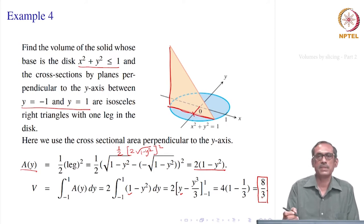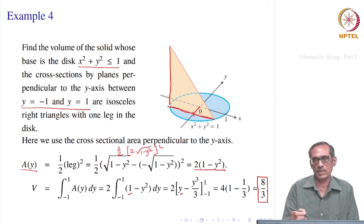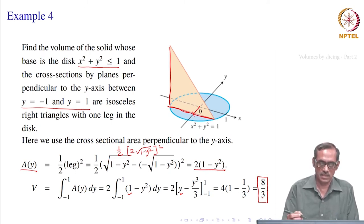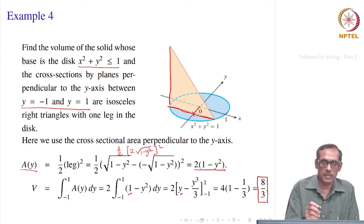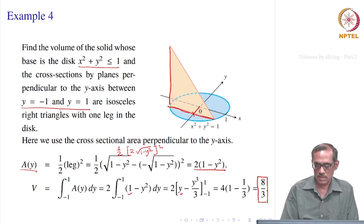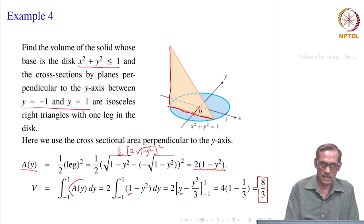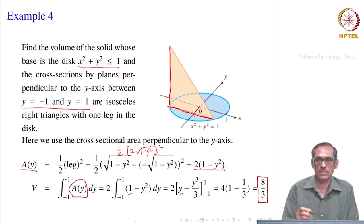Sometimes the problem itself dictates whether you take the x-axis, y-axis, or z-axis — whichever is appropriate. Here, in this problem, it is already given that the cross section is by planes perpendicular to the y-axis. So we have to choose the cross sectional area in terms of y, and that gives the volume as 8/3.